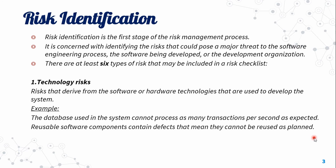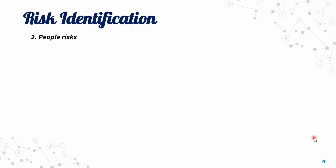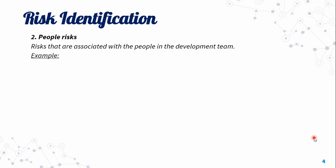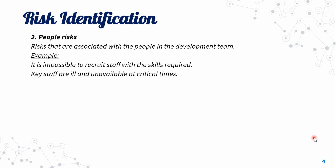Another technology risk example: reusable software components contain defects that mean they cannot be used as planned. Then there are people risks — risks that are associated with the people in the development team. For example, it is impossible to recruit staff with the skills required, key staff are ill and unavailable at critical times, or required training for staff is not available.